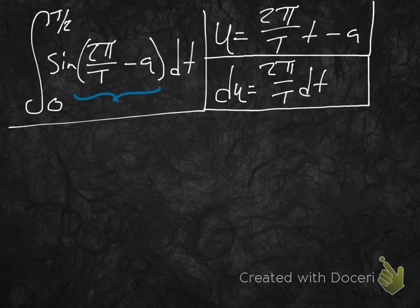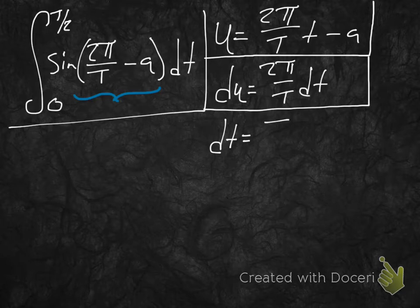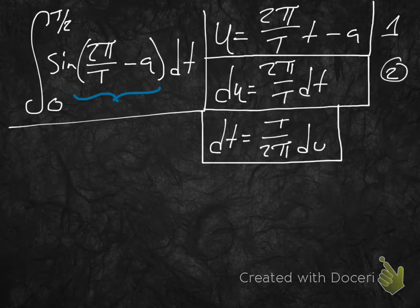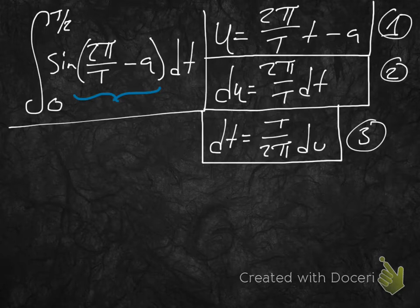We can now figure out what dt is. If du = (2π/T) dt, then by simple algebra, dt = (T/2π) du — we just switch those things around. So we have our three u-substitution steps: u = 2π/T · t − a, du = (2π/T) dt, and therefore dt = (T/2π) du.